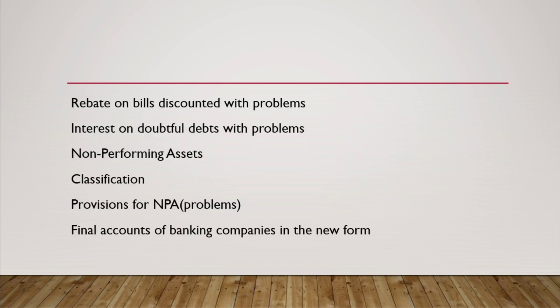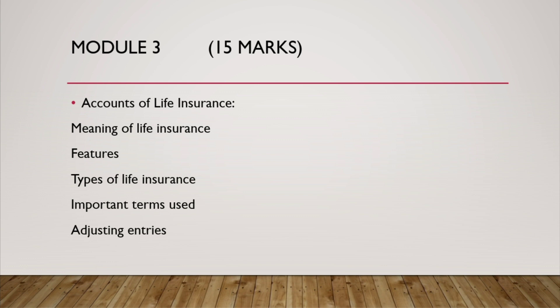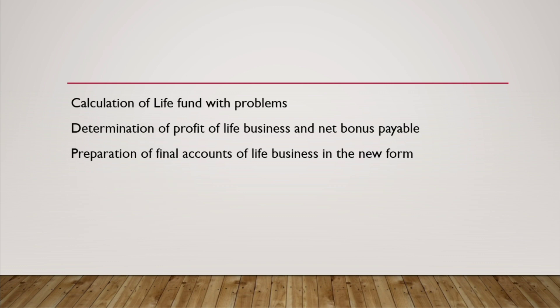Module 3 covers Accounts of Life Insurance, worth 15 marks. Topics include the meaning of life insurance, its features, types of life insurance, important terms used in life insurance, adjusting entries, calculation of life funds with problems, determination of profit of life business and net bonus payable, and preparation of final accounts in the new form.